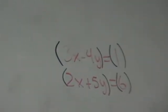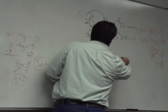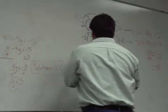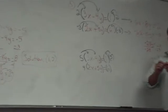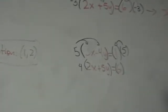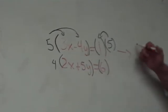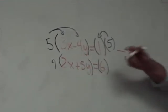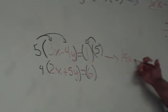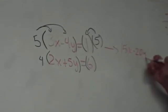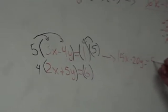Let's see what happens when we multiply the top equation by 5. 5 times 3 is 15x. 5 times negative 4 is negative 20y. Equals 5 times 1, which is 5.